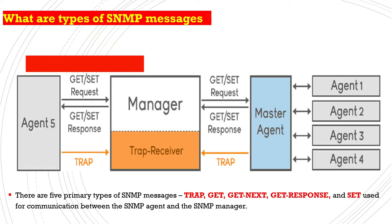As shown in the diagram, there is Agent 5, a manager which also works as a trap receiver, a master agent which could be an EMS device or another type, and other agent devices. The manager sends a request to the master agent, which forwards it to specific agent devices, and those agents respond with a response message back to the manager.